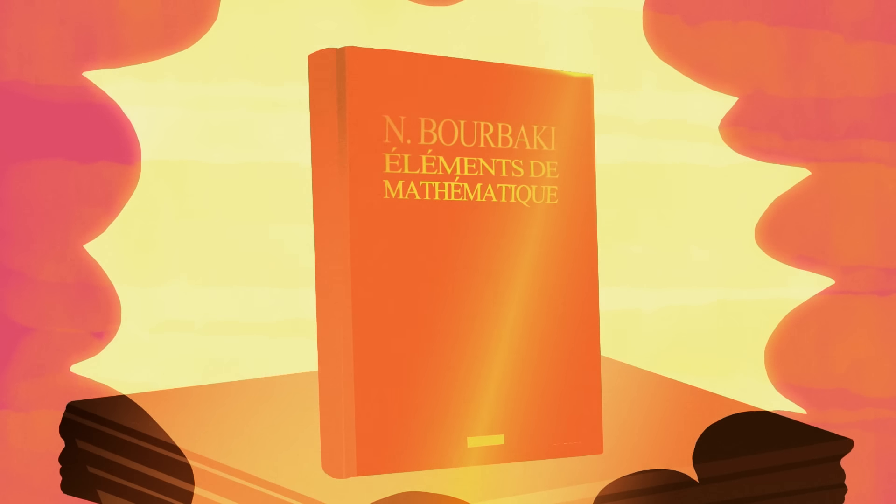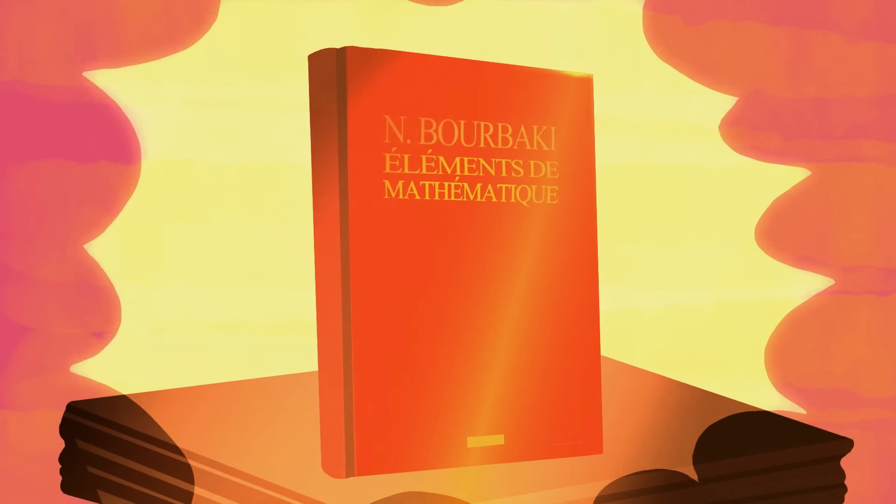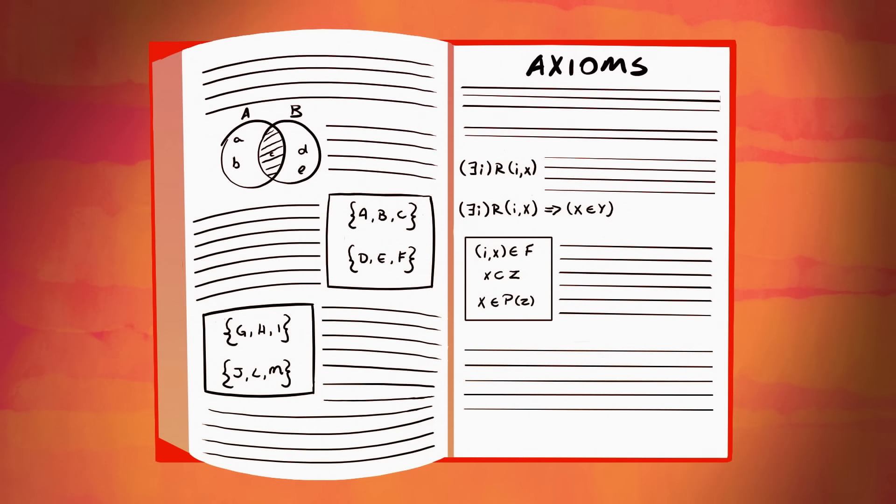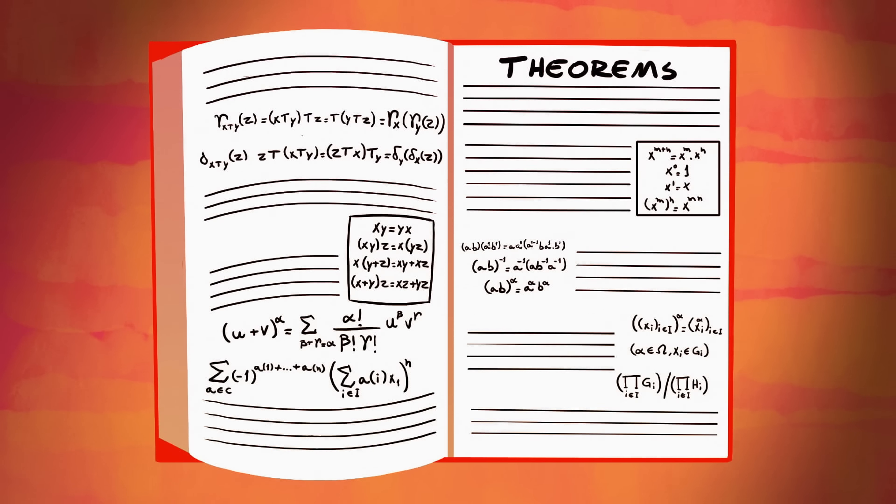The result was the Éléments de Mathématique, a treatise that sought to create a consistent logical framework unifying every branch of mathematics. The text began with a set of simple axioms—laws and assumptions—it would use to build its argument. From there, its authors derived more and more complex theorems that corresponded with work being done across the field.